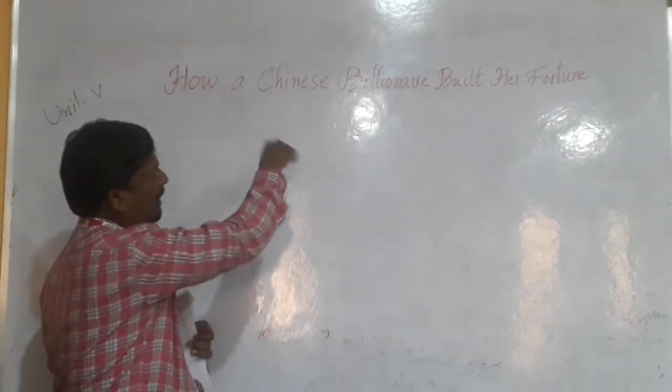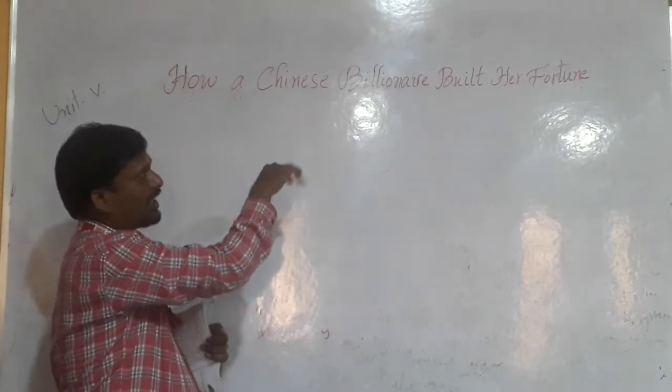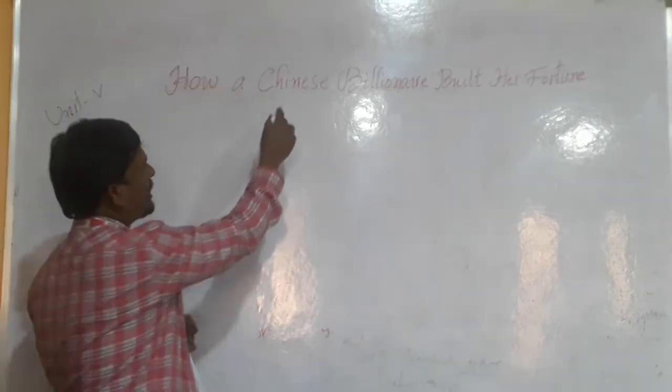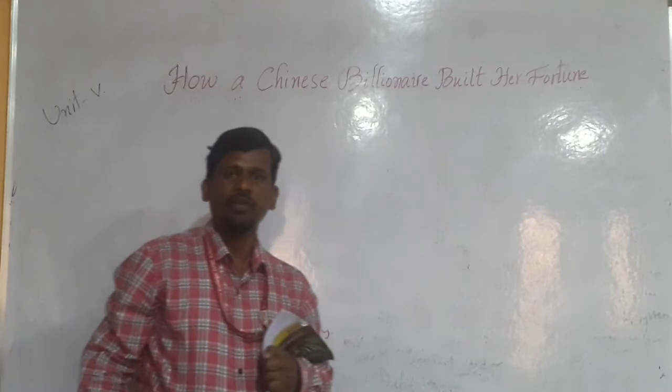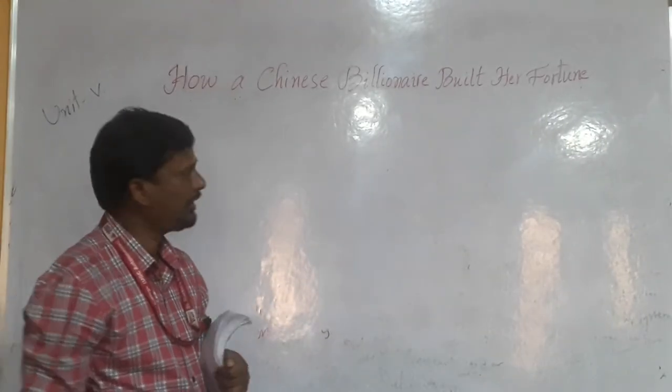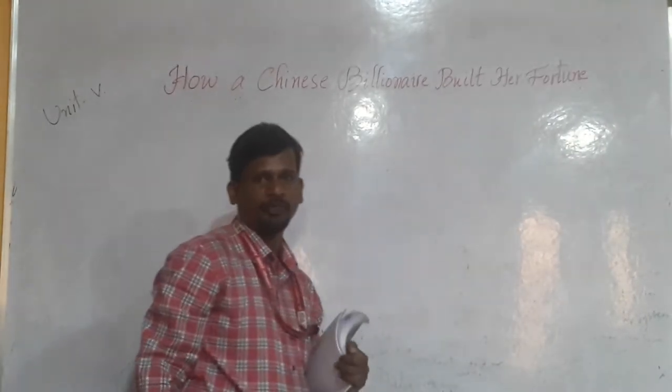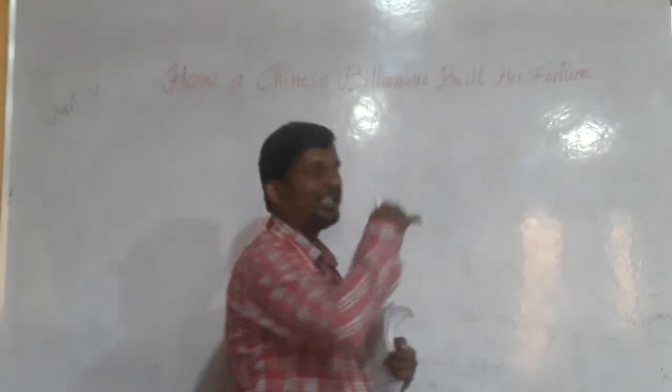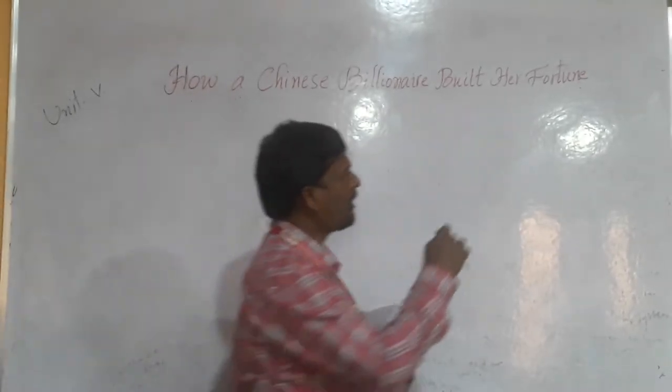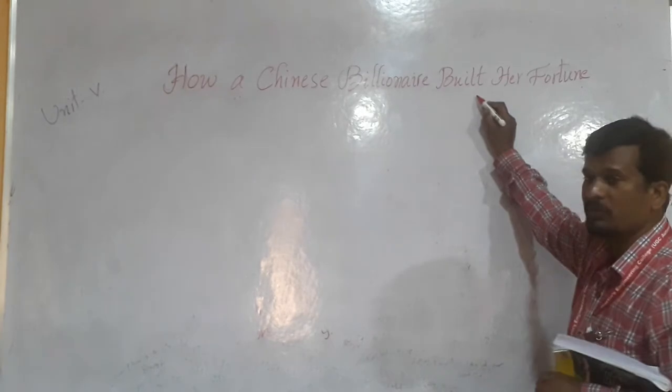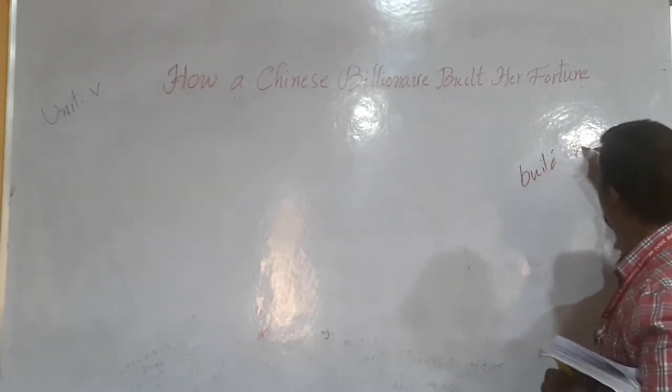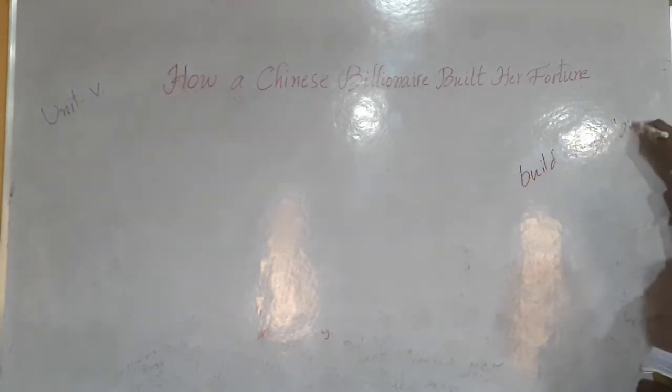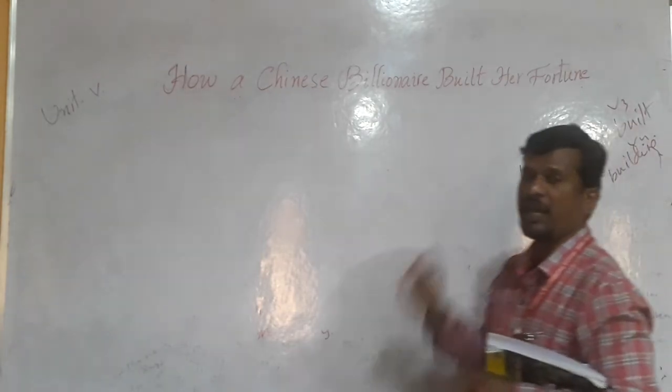Adjectives will explain about the noun, so here the word Chinese is explaining about Billionaire. Billionaire is a noun form. Here, Built is a verb form. It is indicating some action. You know that some verb forms are there like Build, Built, Built, like Building. These are the verb forms - V1, V2, V3, and V4.